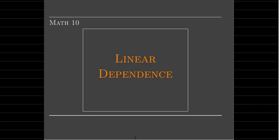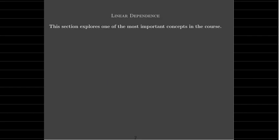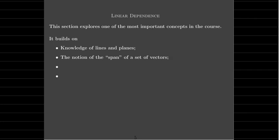In this video, we're going to explore one of the most important concepts in the entire course. It's going to rely on knowledge of lines and planes, the notion of the span of a set of vectors, linear systems, and elementary row operations and reduced row echelon form. So if you're not clear on any of those topics, you may want to go back to the textbook or the lecture videos and refresh your memory on those topics.